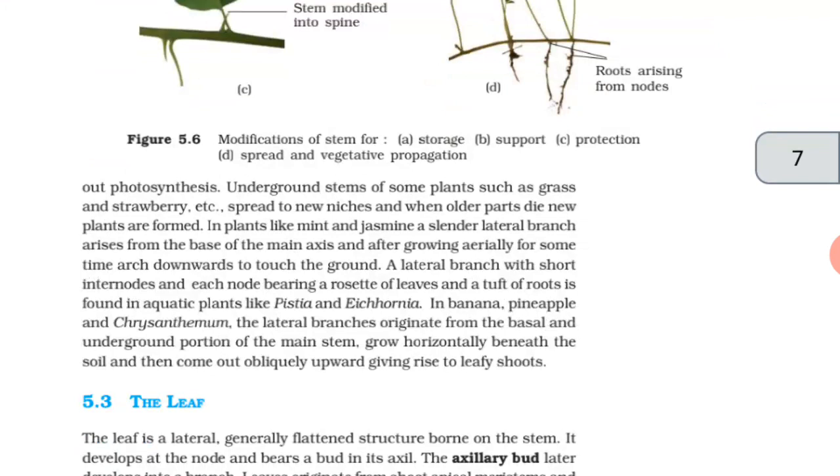In banana, pineapple, and chrysanthemum, the lateral branches originate from the basal and underground portion of the main stem, grow horizontally beneath the soil, and then come out obliquely upward, giving rise to leafy shoots.